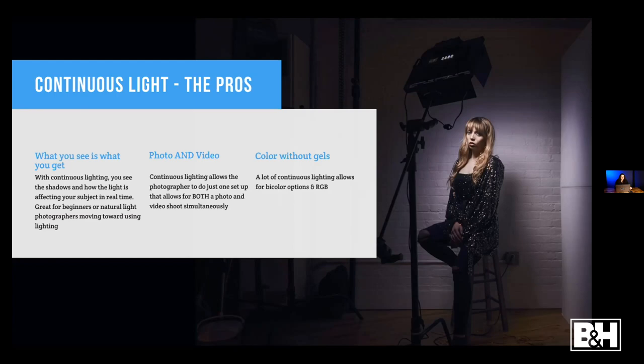Another pro I wanted to throw out there is color without gels. In this picture, photographer Brandy Nicole is being lit by a Nanlite mix panel, which allows you to have various effects and special effects. It also allows you to have any kind of gel you could possibly think of built right in. I'll talk a little bit later about how monolights — much like strobes — can also have gels put on them and use soft boxes.